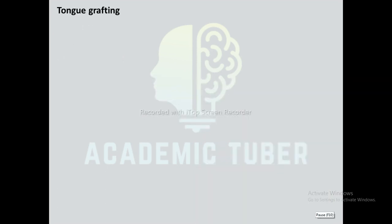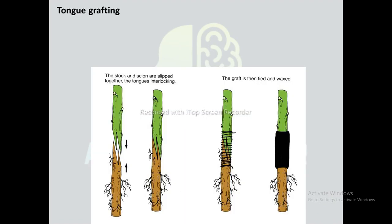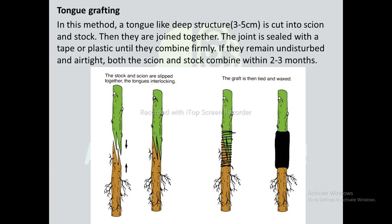Next is tongue grafting. In tongue grafting, the scion and stock are joined together and the joint is sealed with a tape or plastic until they combine firmly. If left undisturbed and airtight, both the scion and stock combine within 2 to 3 months.